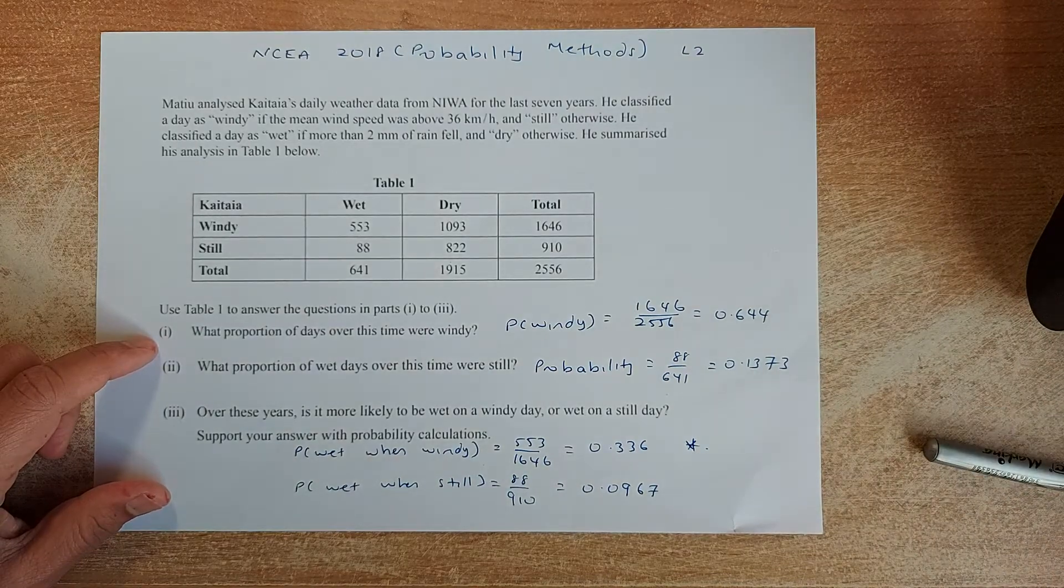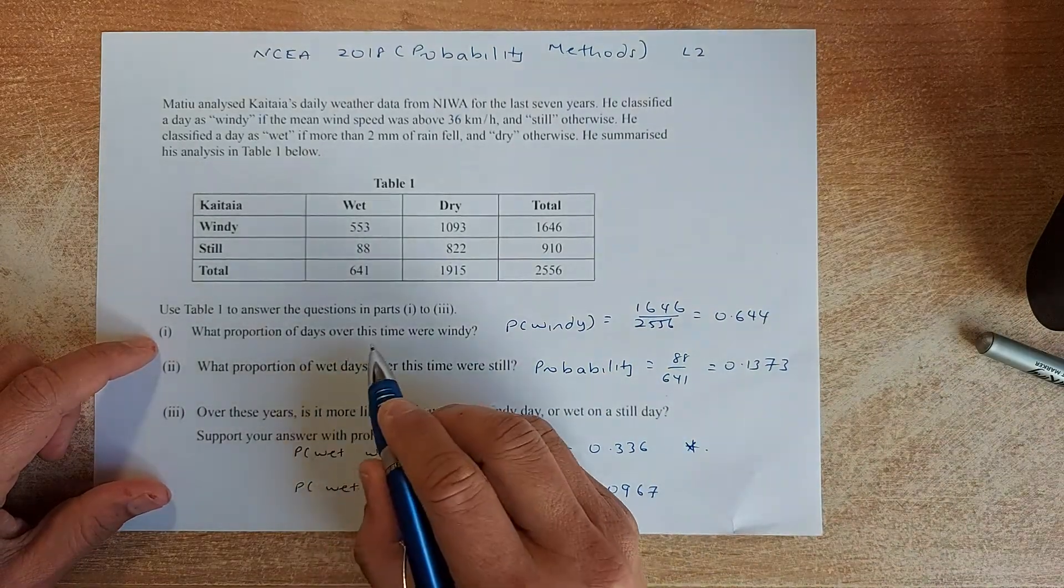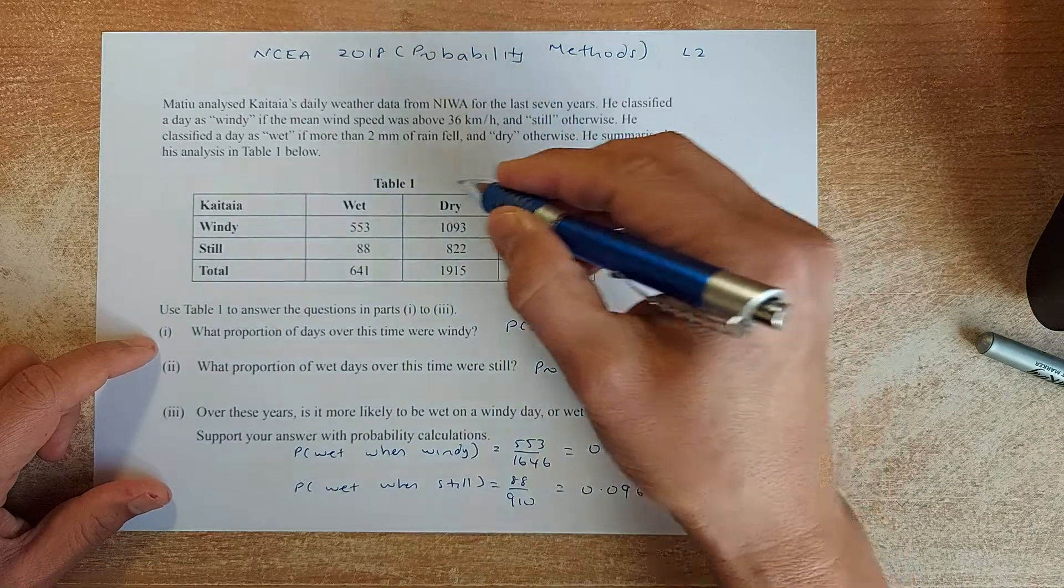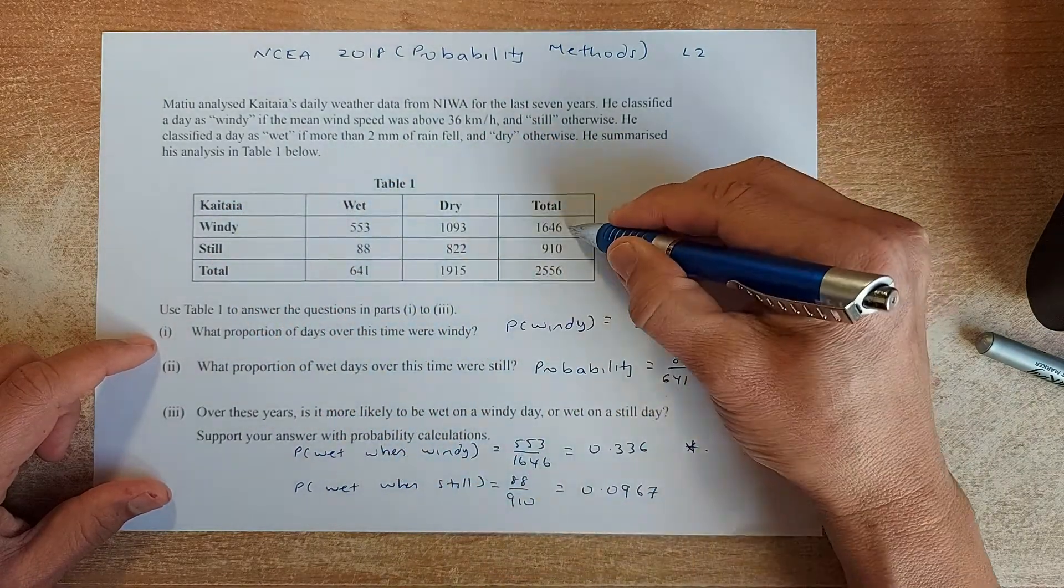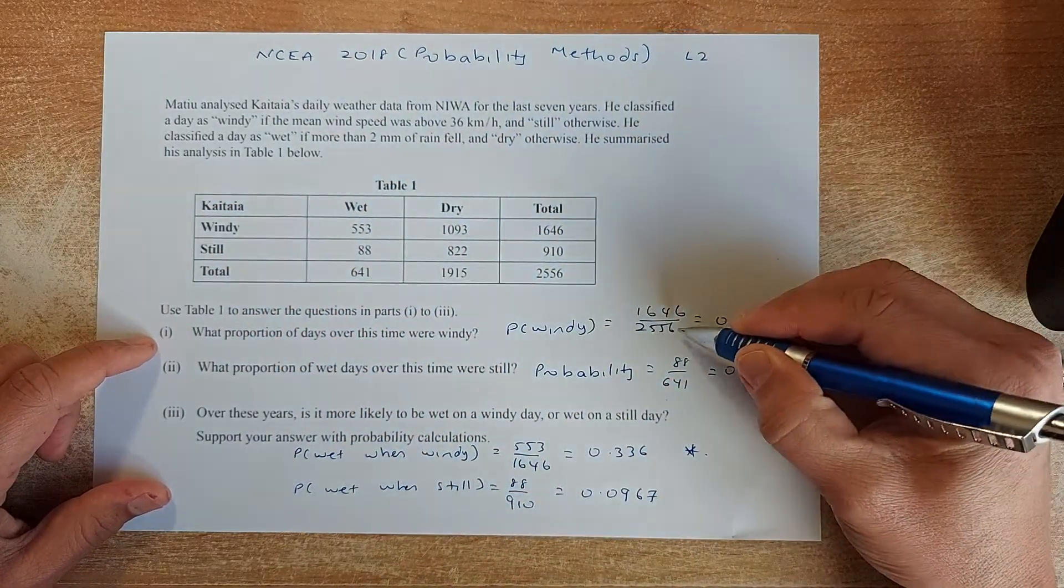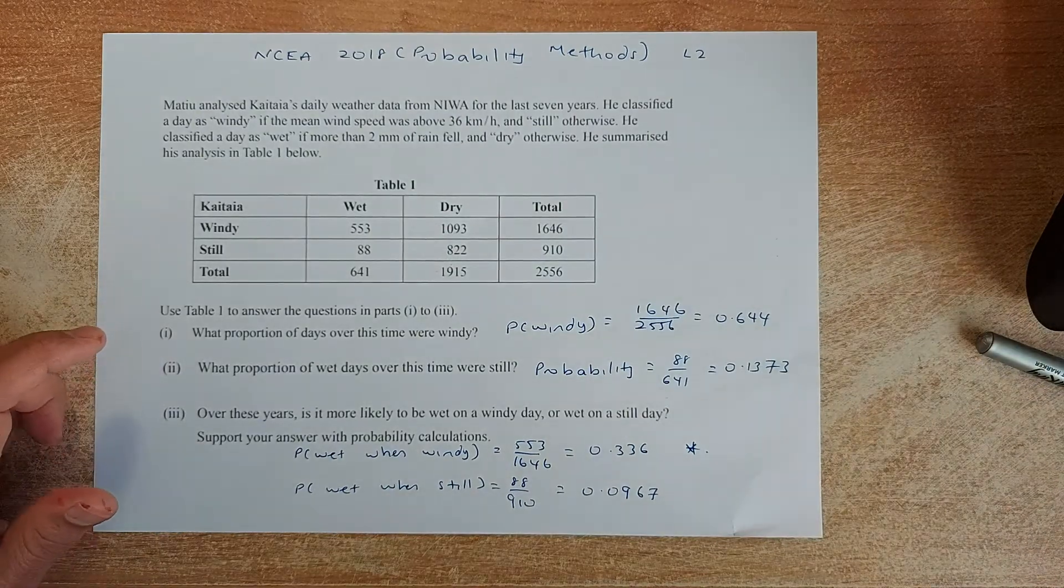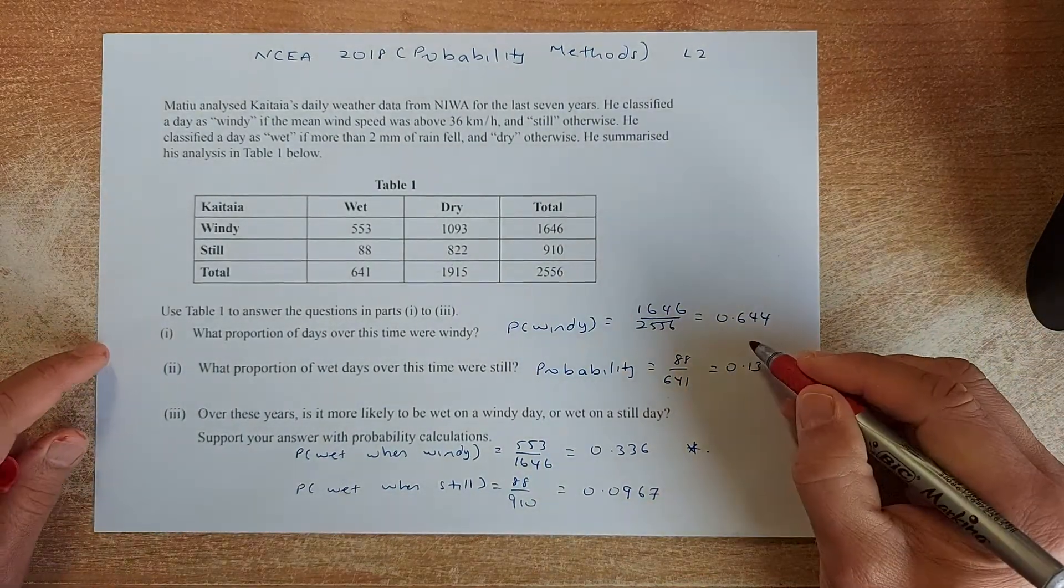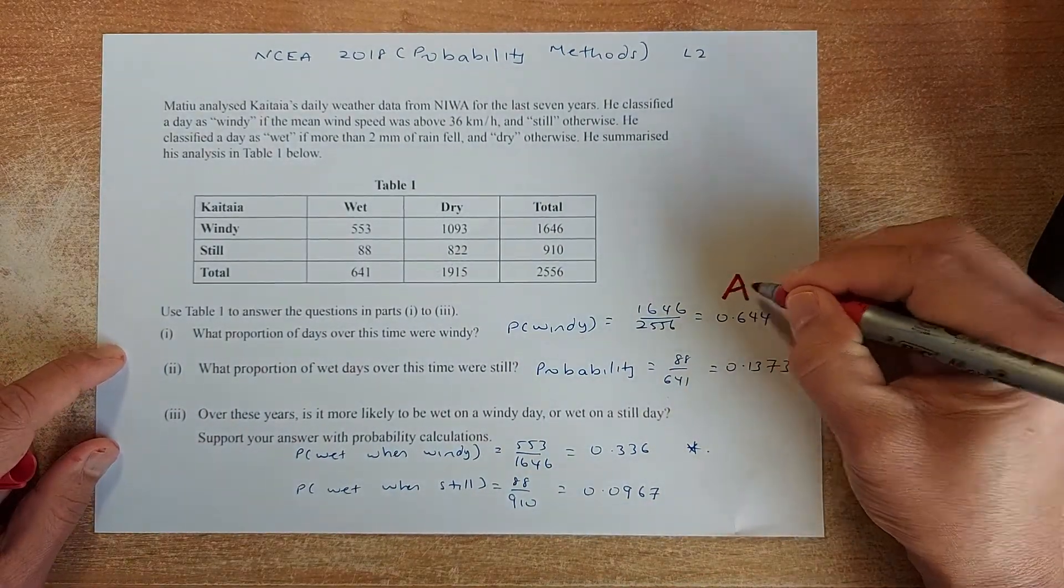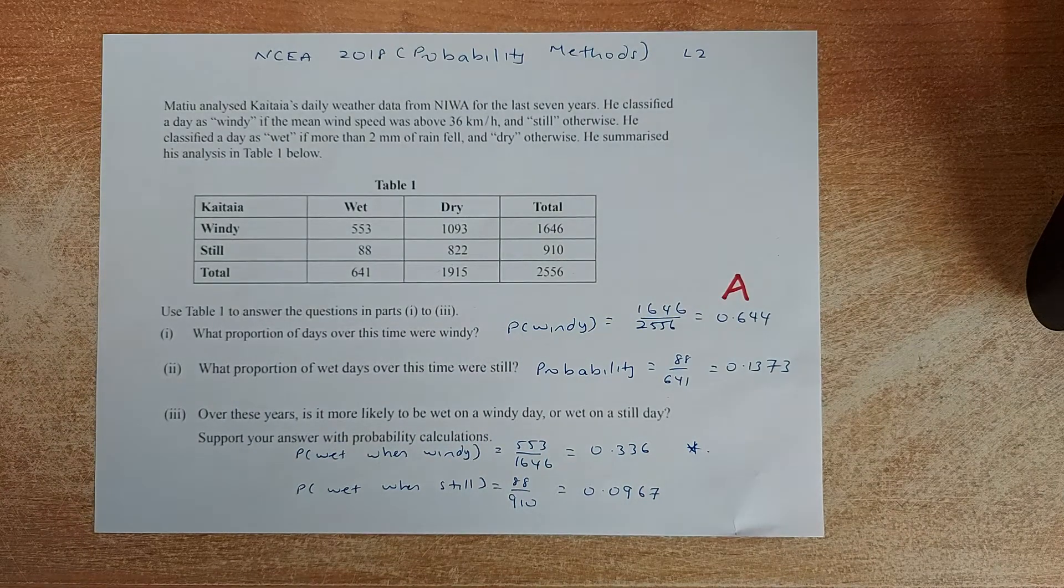So what proportion of the days over this time were windy? So windy is going to be here. So it's going to be 1,646 out of the total number of days is 2,556. And the answer, put in your calculator, is 0.644. And that will give you a simple achieve.